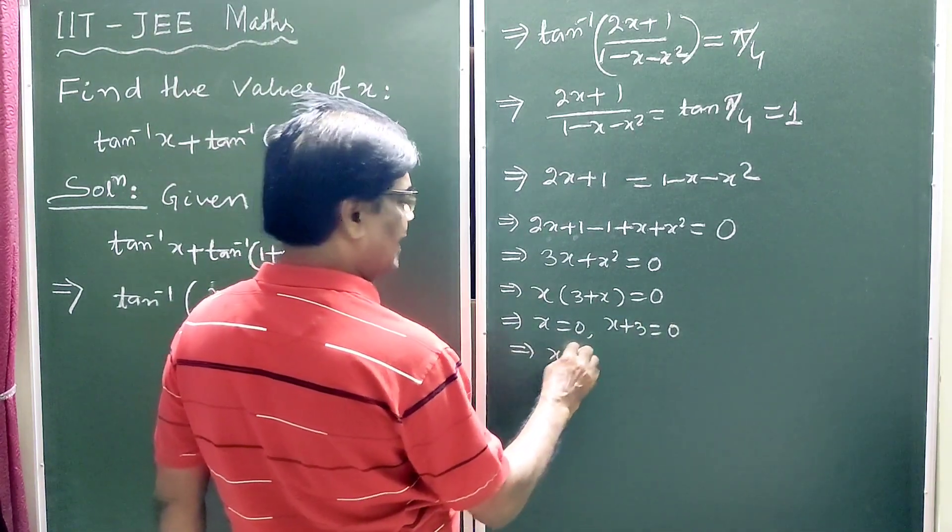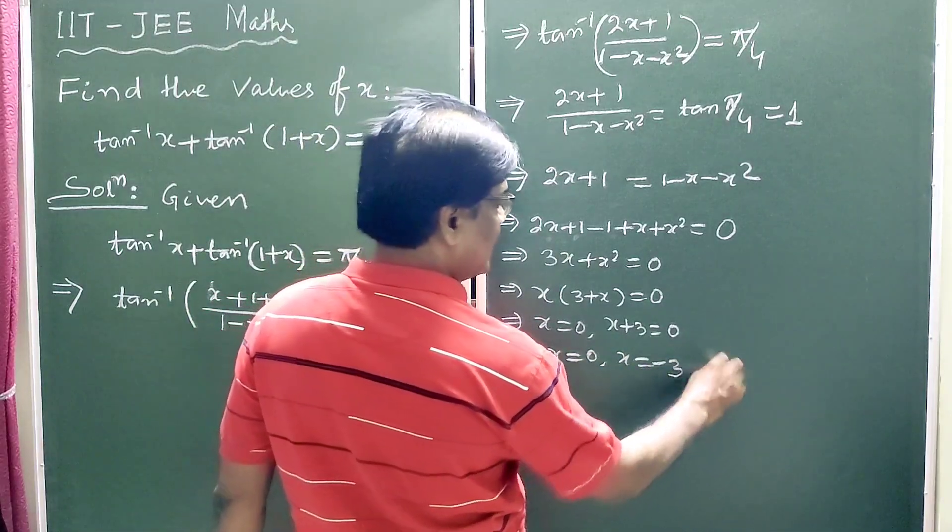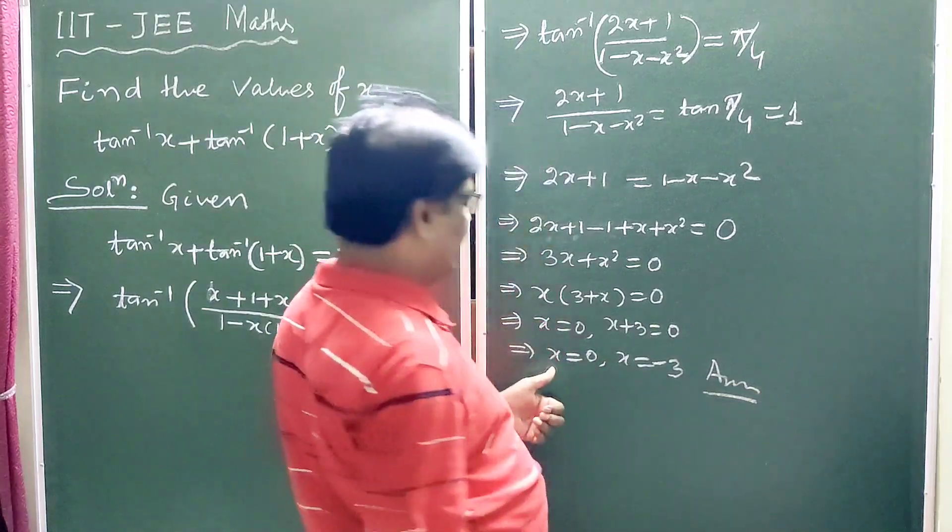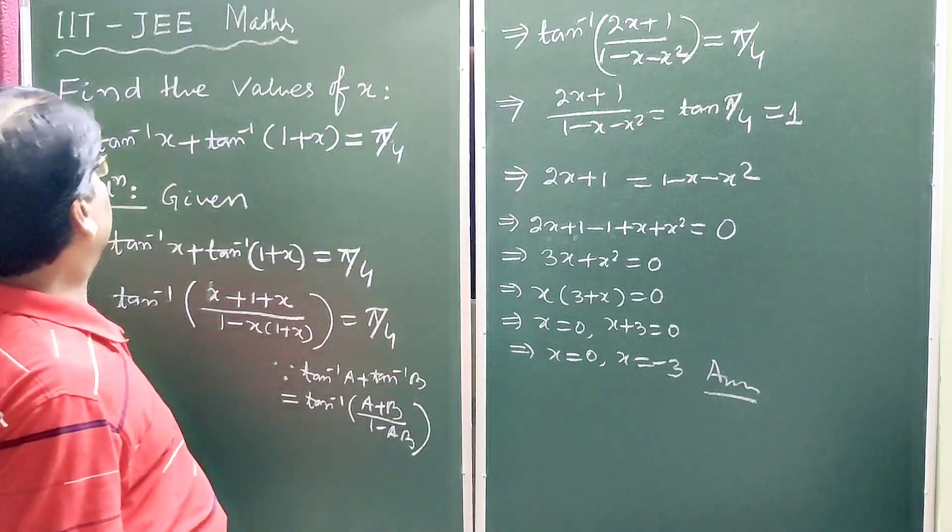This implies x is equal to 0, x is equal to minus 3. So there are two values of x we get here, x is equal to 0, x is equal to minus 3.